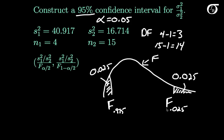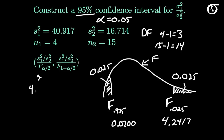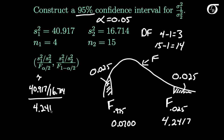Now we can get these values from a computer or a table. This value is 4.2417, and this one is 0.0700 to four decimal places. I have separate videos for how to find those values in a table or using the computer package R. Now we've got all the information we need to construct our interval. The lower bound is simply 40.917 over 16.714, the ratio of the sample variances, over F.025 which is 4.2417.